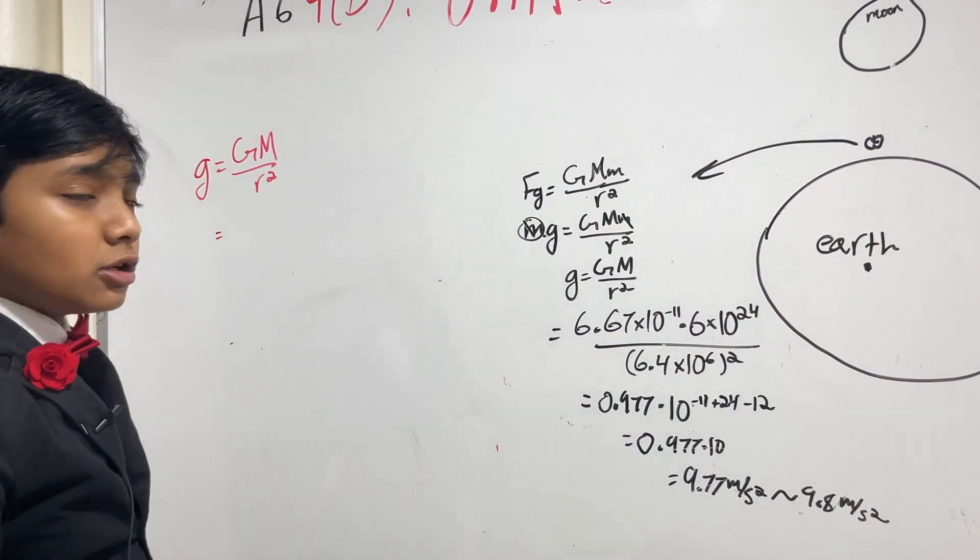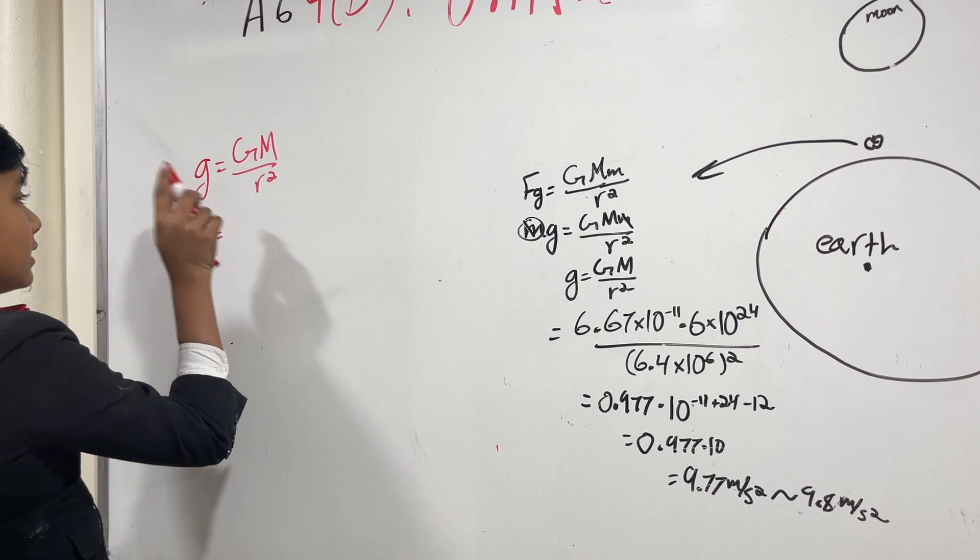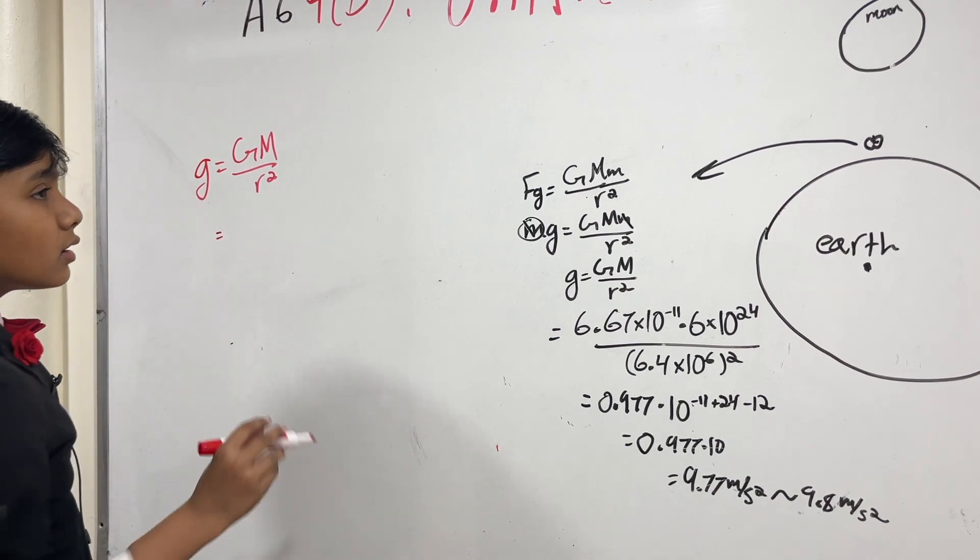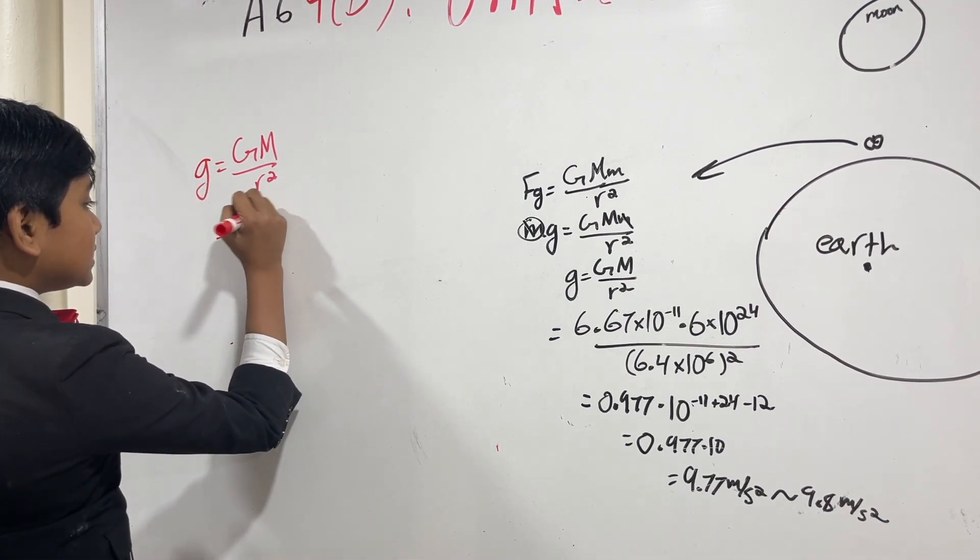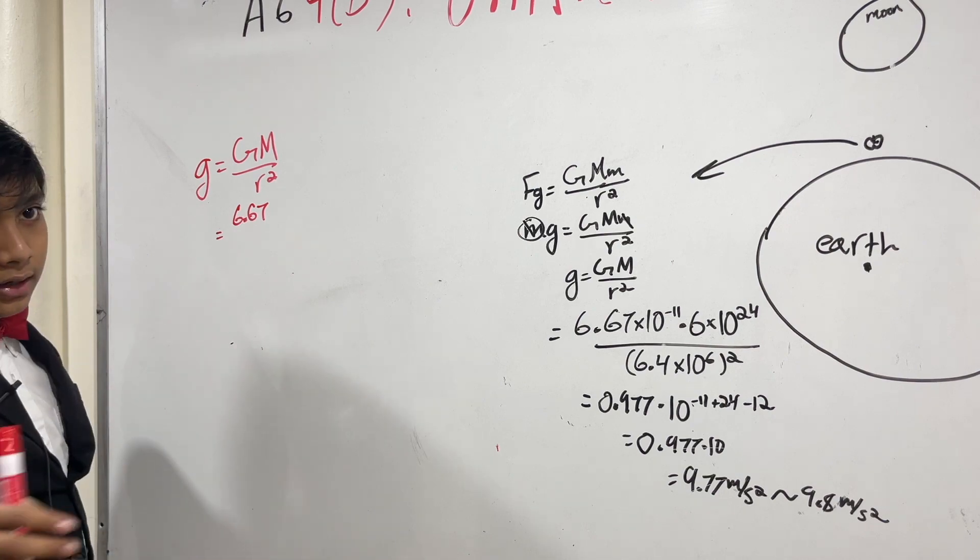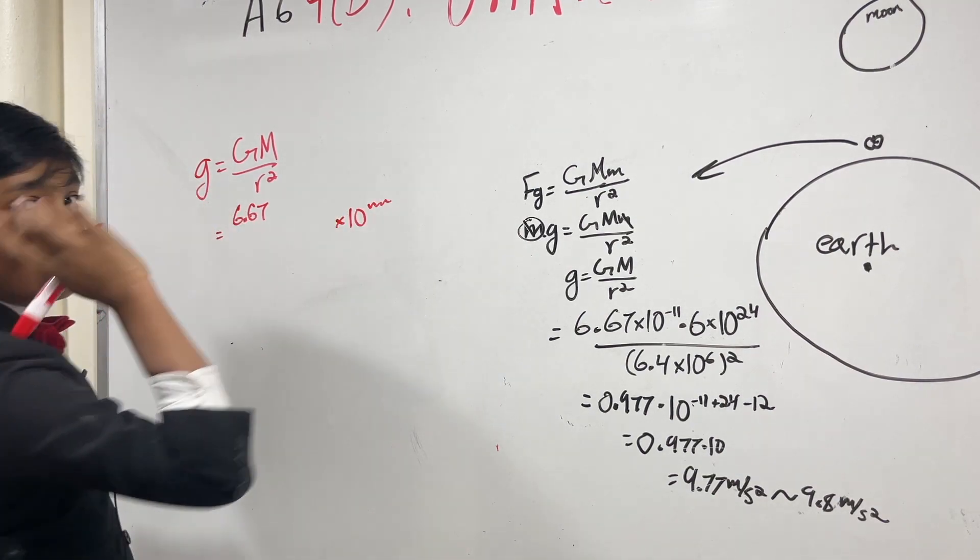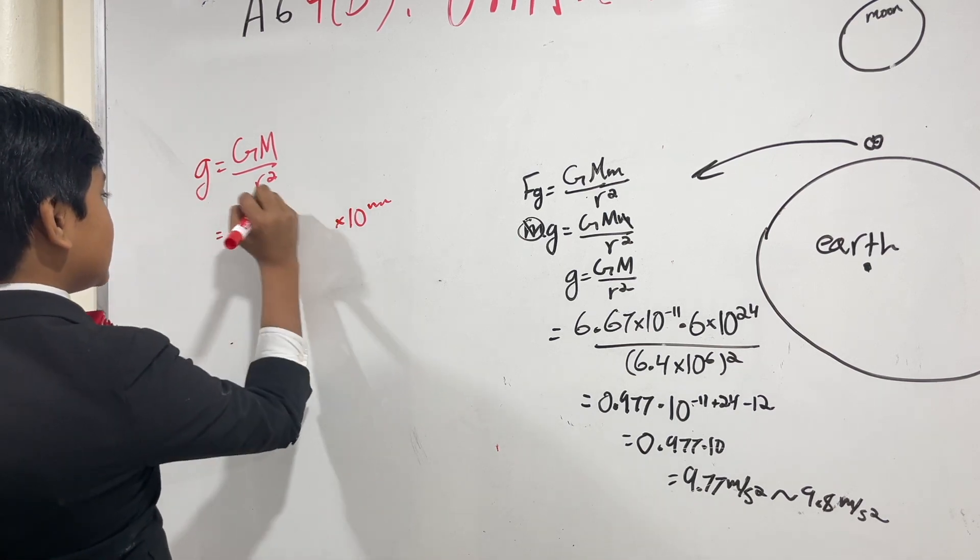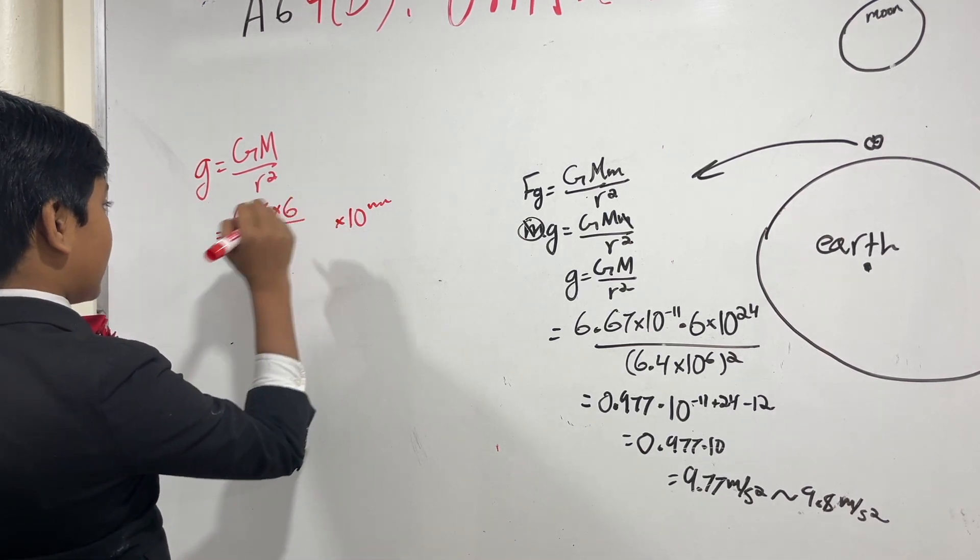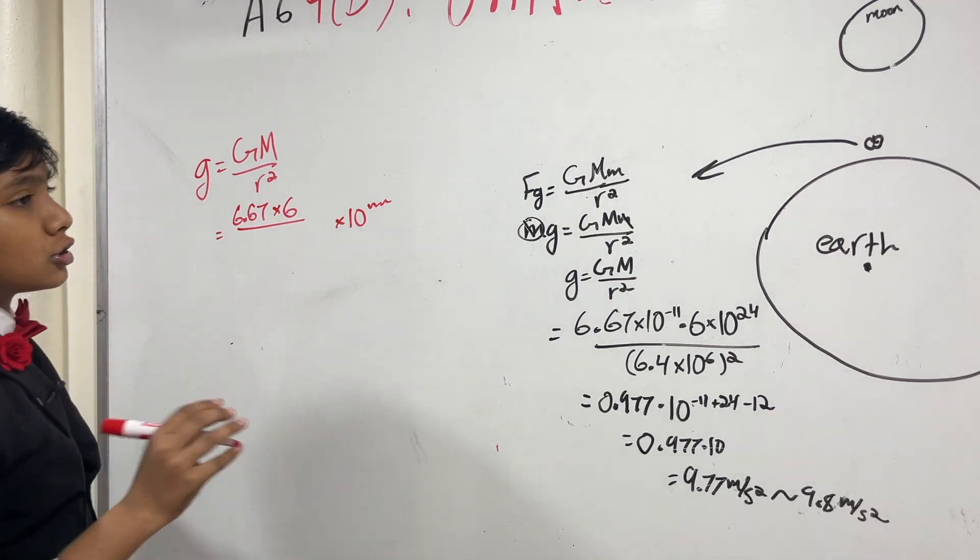Alright, so now we have G and GM over r squared. So we have 6.67, and we'll leave the times 10 to the something at the end over here. So we have 6.67 times 6 from the 6 times 10 to the 24th, over r squared.